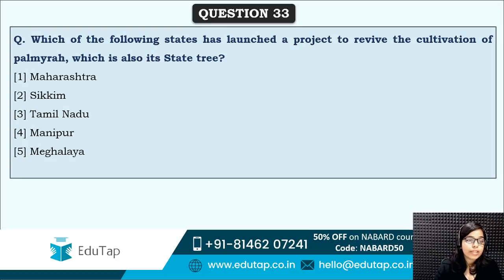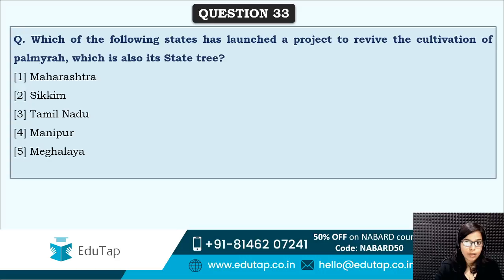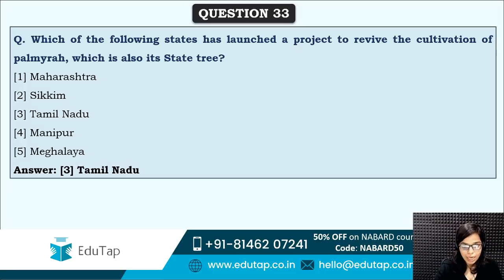Next: which of the following states has launched a project to revive the cultivation of Palmyra, which is also its state tree? Two pieces of information come from this question: which state launched the project, and that Palmyra is the state tree of that state. The correct answer is option three — Tamil Nadu.